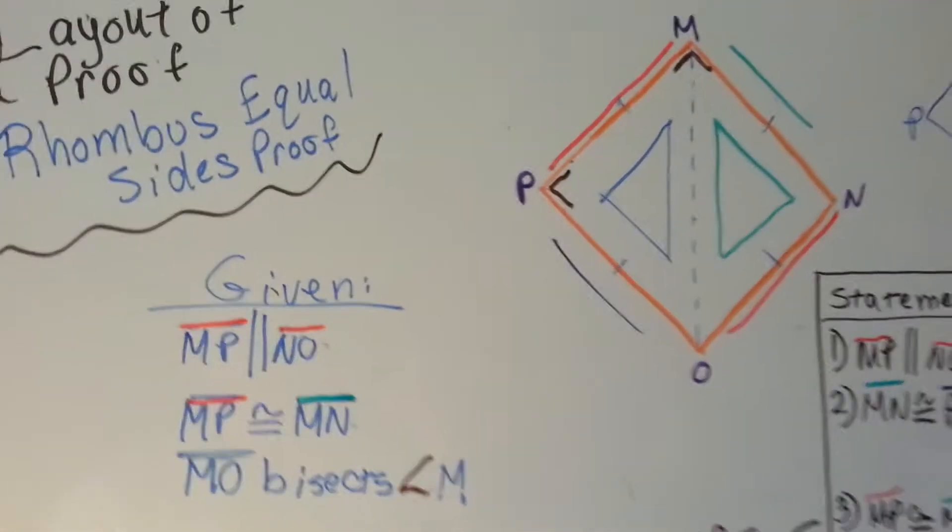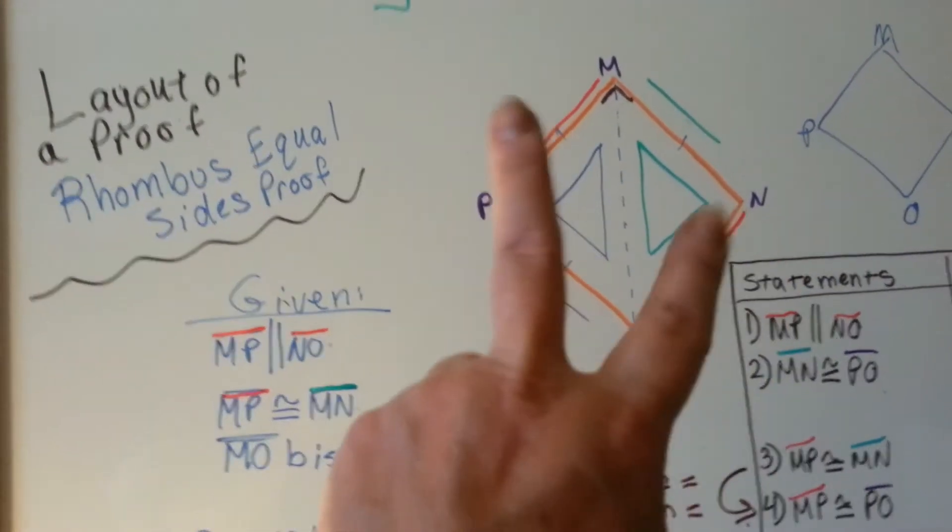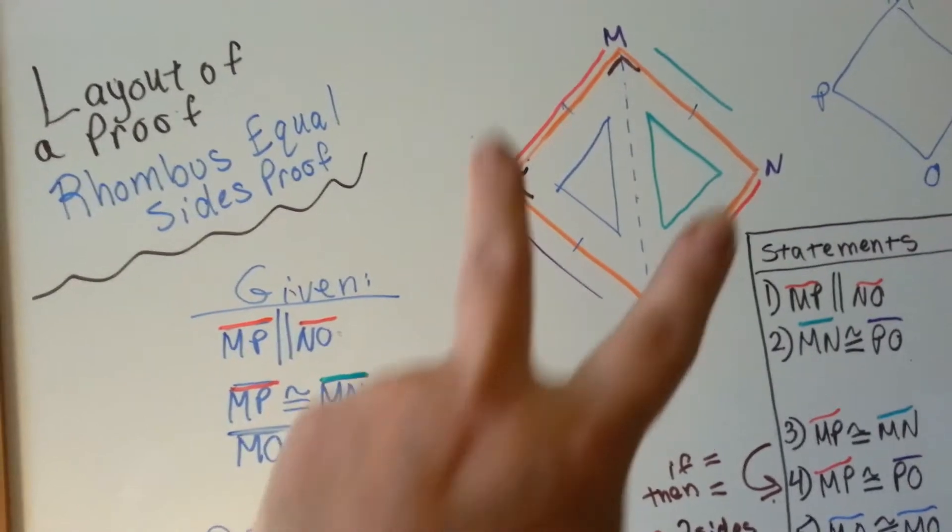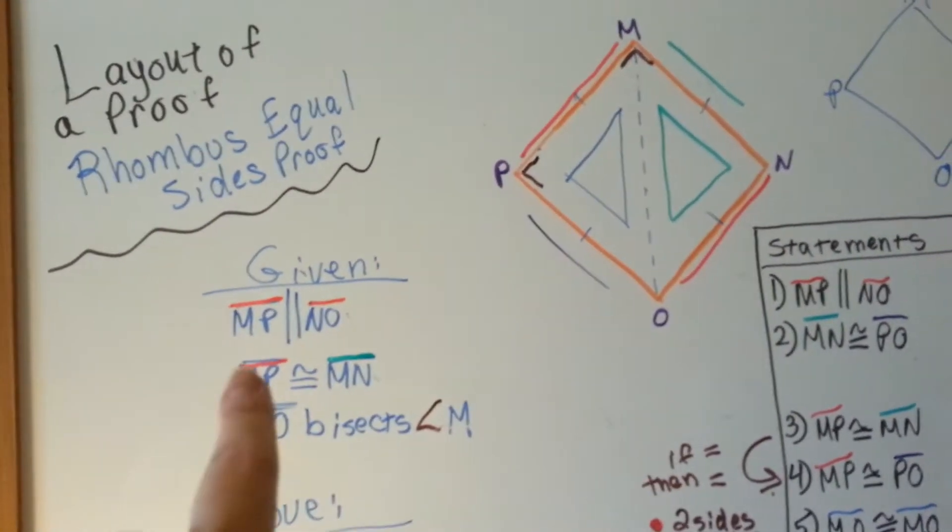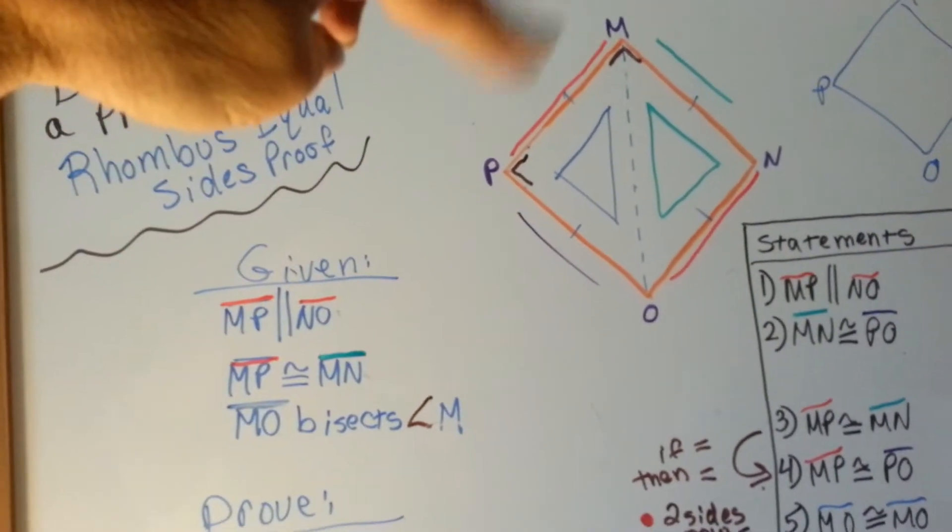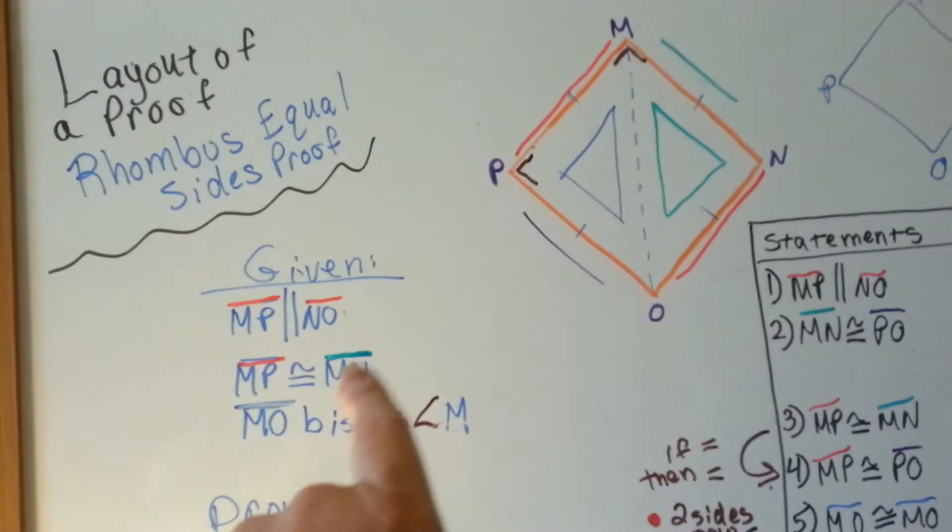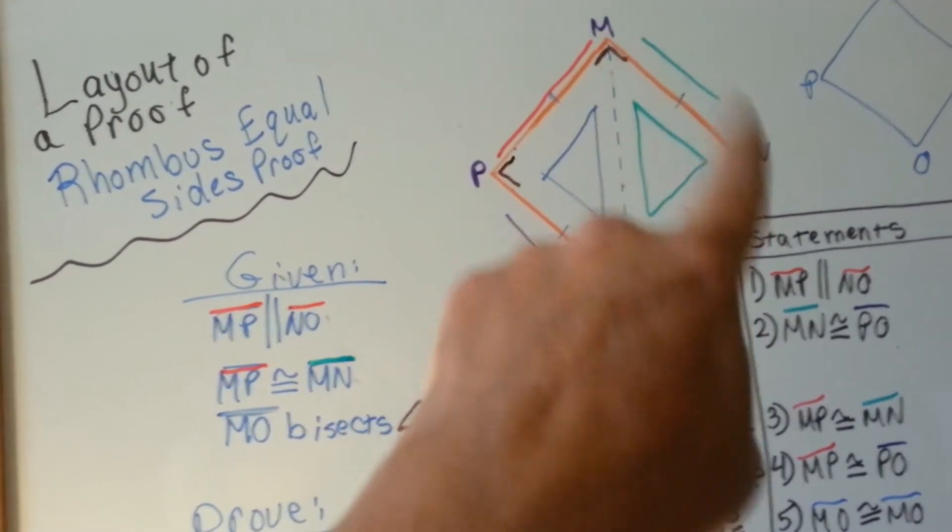So let's look at our given. Again, MP and NO, two red lines, and I know either there are parallel to each other. MP, the red one over here, is congruent to the green one, MN. This is congruent to that one.